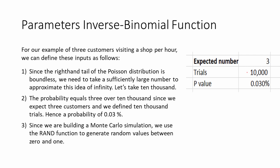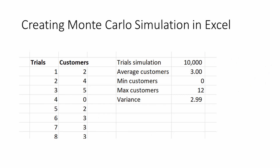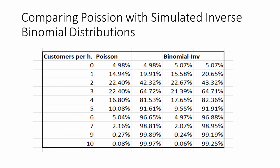Now we can build a simple Monte Carlo simulation with 10,000 trials, giving us 10,000 results of customer numbers in our shop. Using the COUNTIF or frequency function we can count the number of occurrences and the corresponding probabilities. Comparing the results of our Poisson distribution function and the inverse binomial simulation, we see that we get close to similar results.